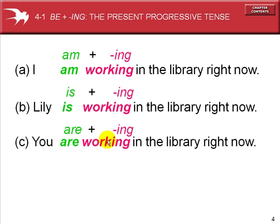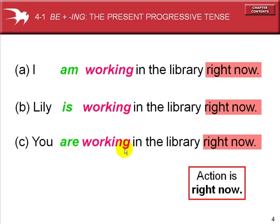You are working in the library right now. The verb to be must match the subject of the sentence. To form the present progressive, we then add the verb with an ing ending. This action is taking place right now — I am working in the library right now. It is happening as we speak.